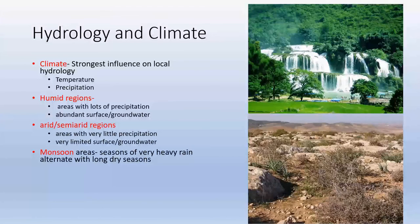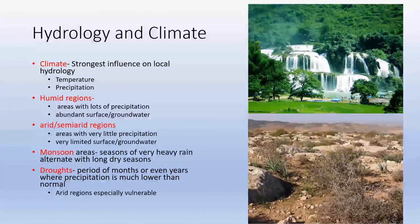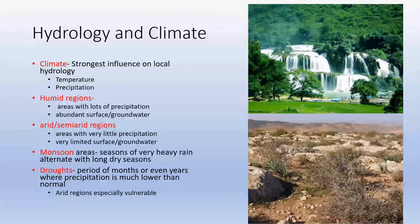Monsoon areas have very seasonal, prolonged rainfall alternating with very dry seasons. Droughts are periods of months or even years where precipitation is much lower than normal. Arid regions out west are especially vulnerable to drought because they're already lacking water — any reduction is immediately detrimental.